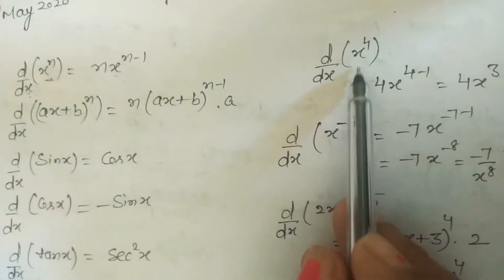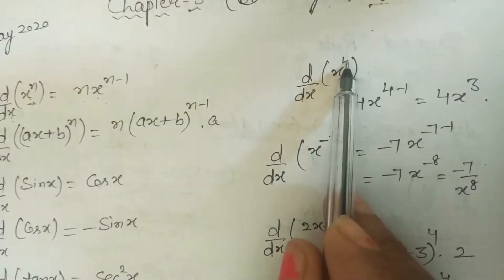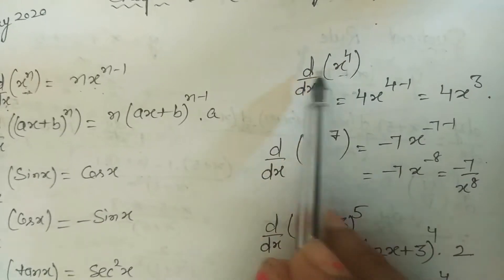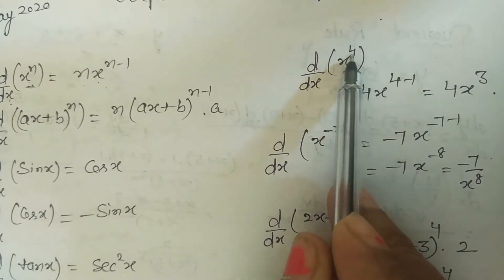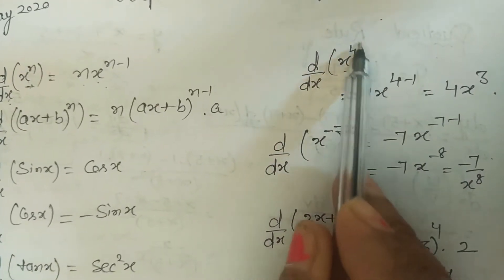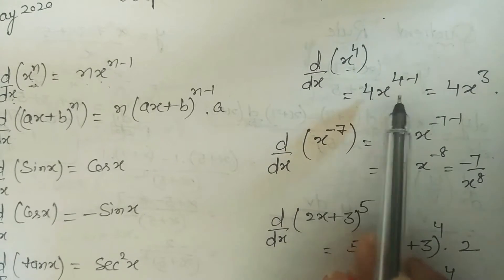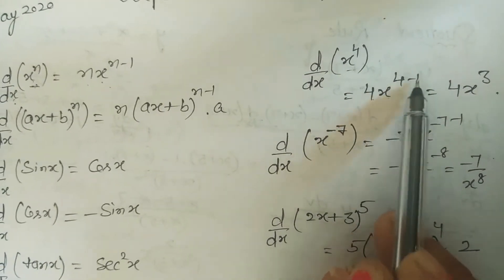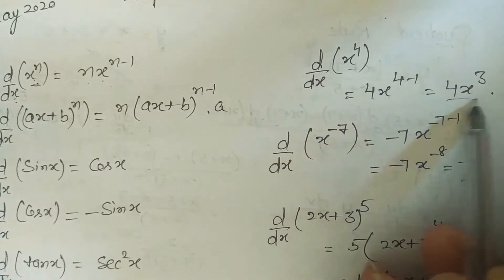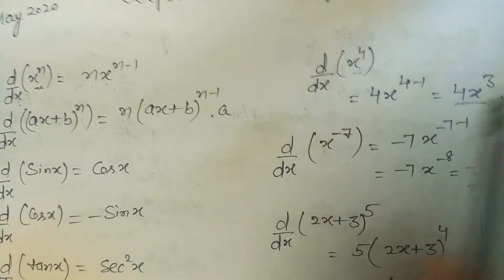Suppose we want to find the derivative of x^4. Here n is 4, so we take 4·x^(4-1), which gives us 4x³.